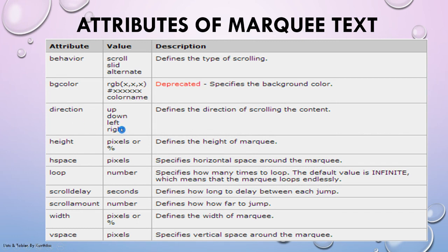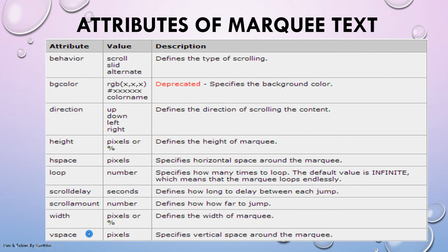The attributes of the marquee tag are: behavior — how it scrolls on the screen; bgcolor — background color; direction — left, right, top, or bottom; height — height of the background; hspace — horizontal space around the marquee; loop — how many times it scrolls (if infinite, you don't need to specify a number, it keeps scrolling until the tab is closed); scrolldelay — the delay between each scroll cycle; scrollamount — the scroll speed; width; and vspace — vertical space around the marquee.